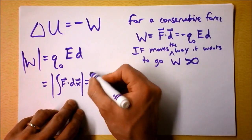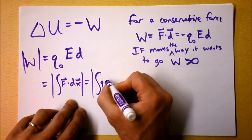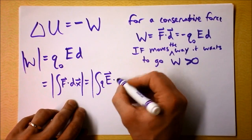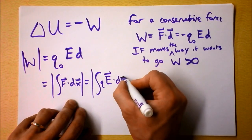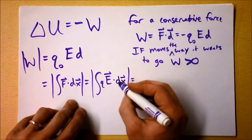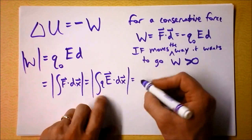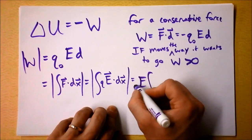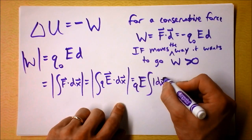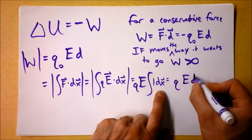Electric force is charge times electric field. So the work is the integral of the force dotted into the distance. If the thing is going the way the electric field is pointing, these are parallel and we don't need sines or cosines. We can pull the electric field out, and we've got charge times electric field times the integral of 1 dx, which is just how far you've gone. This becomes Q times E times distance.